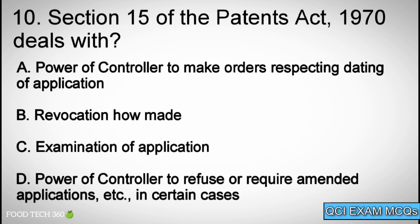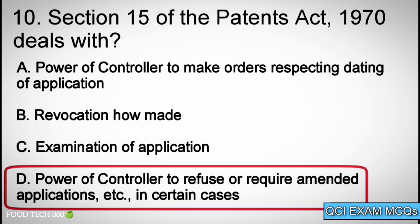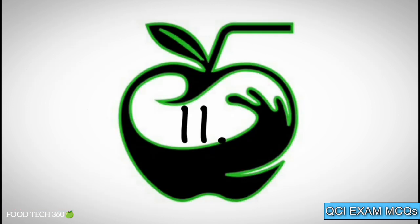Question number 10: Section 15 of the Patents Act 1970 deals with? Options: A. Power of controller to make orders respecting dating of application, B. Revocation how made, C. Examination of application, D. Power of controller to refuse or require amended applications etc. in certain cases. Correct answer: D.